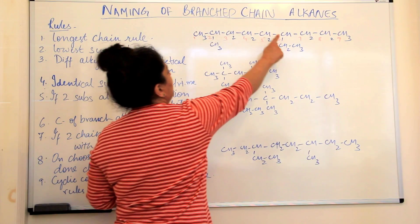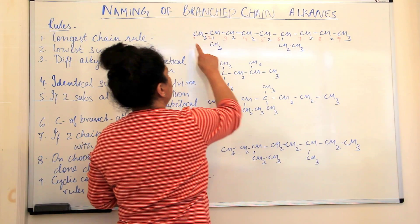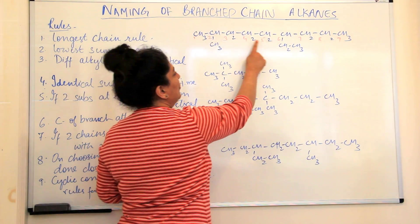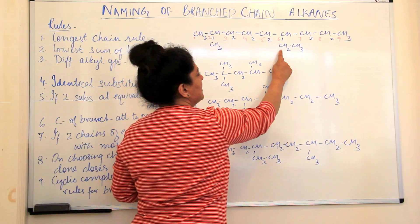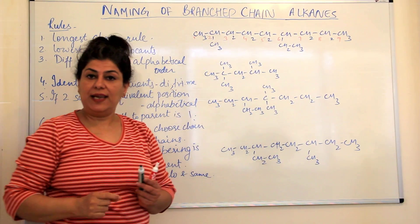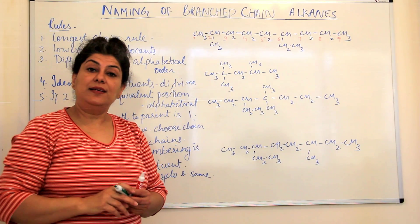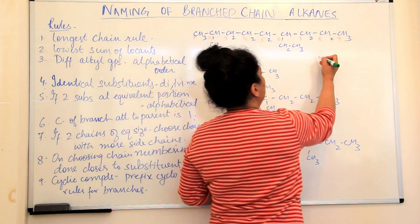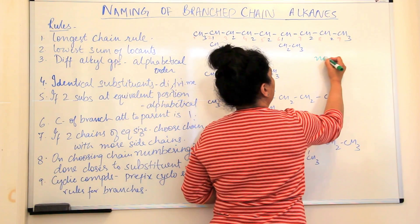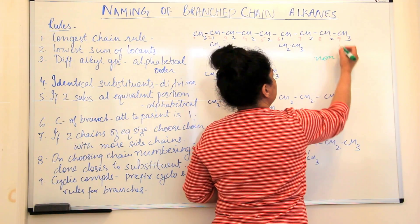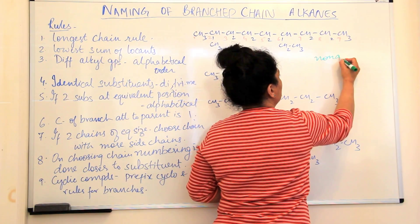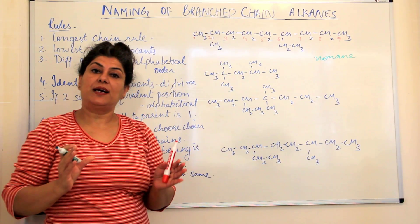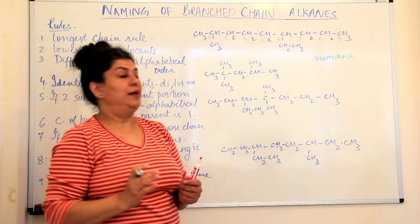If I count the other chain, we get only 8. Since 9 is more than 8, the word root here would be 'non' and since it's an alkane, it's nonane. The parent hydrocarbon is nonane.